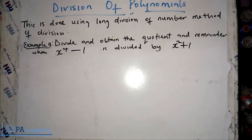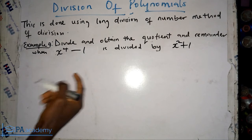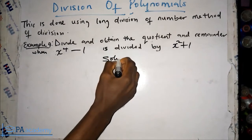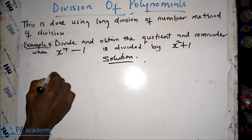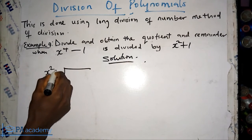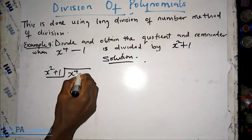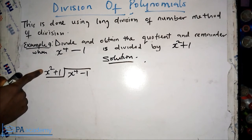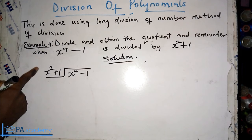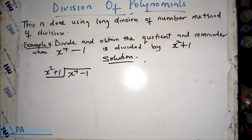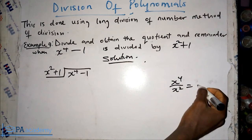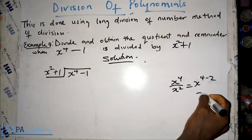For Example 4, divide and obtain the quotient and remainder when x⁴ minus 1 is divided by x² plus 1. Let's draw the long division sign with x² plus 1 on the outside and x⁴ minus 1 inside. Remember, we use the term with the highest degree to divide. So x⁴ divided by x² equals x⁴⁻² which is x².